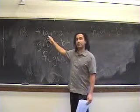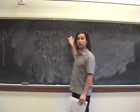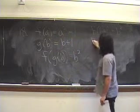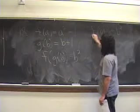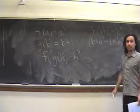By the first rule, this says take whatever you put in and square it and then subtract 1. So in other words, b plus 1 squared minus 1 equals b squared.